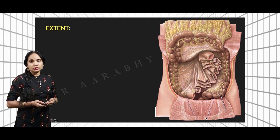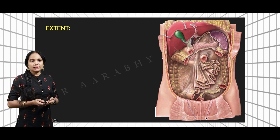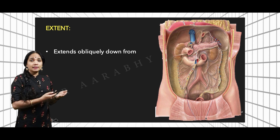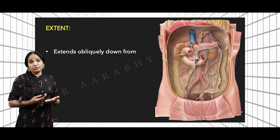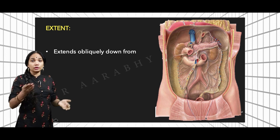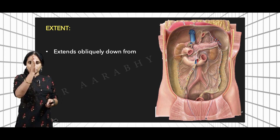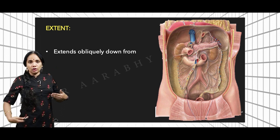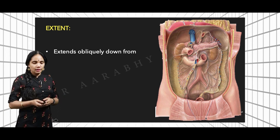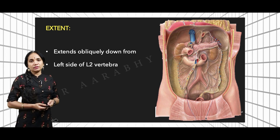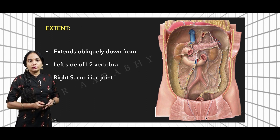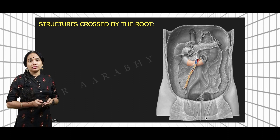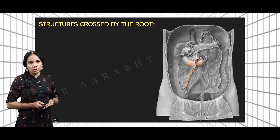What is the extent of the mesentery? The mesentery has an oblique extent, and that oblique alignment is due to the fact that the small intestine or midgut undergoes rotation. Because of that rotation, the mesentery is not vertical or horizontal — it is oblique, going from the left side all the way down to the right side. It extends from just to the left of the L2 vertebra all the way down to the right sacroiliac joint. The structures crossed by the root of the mesentery is a favorite question of examiners.